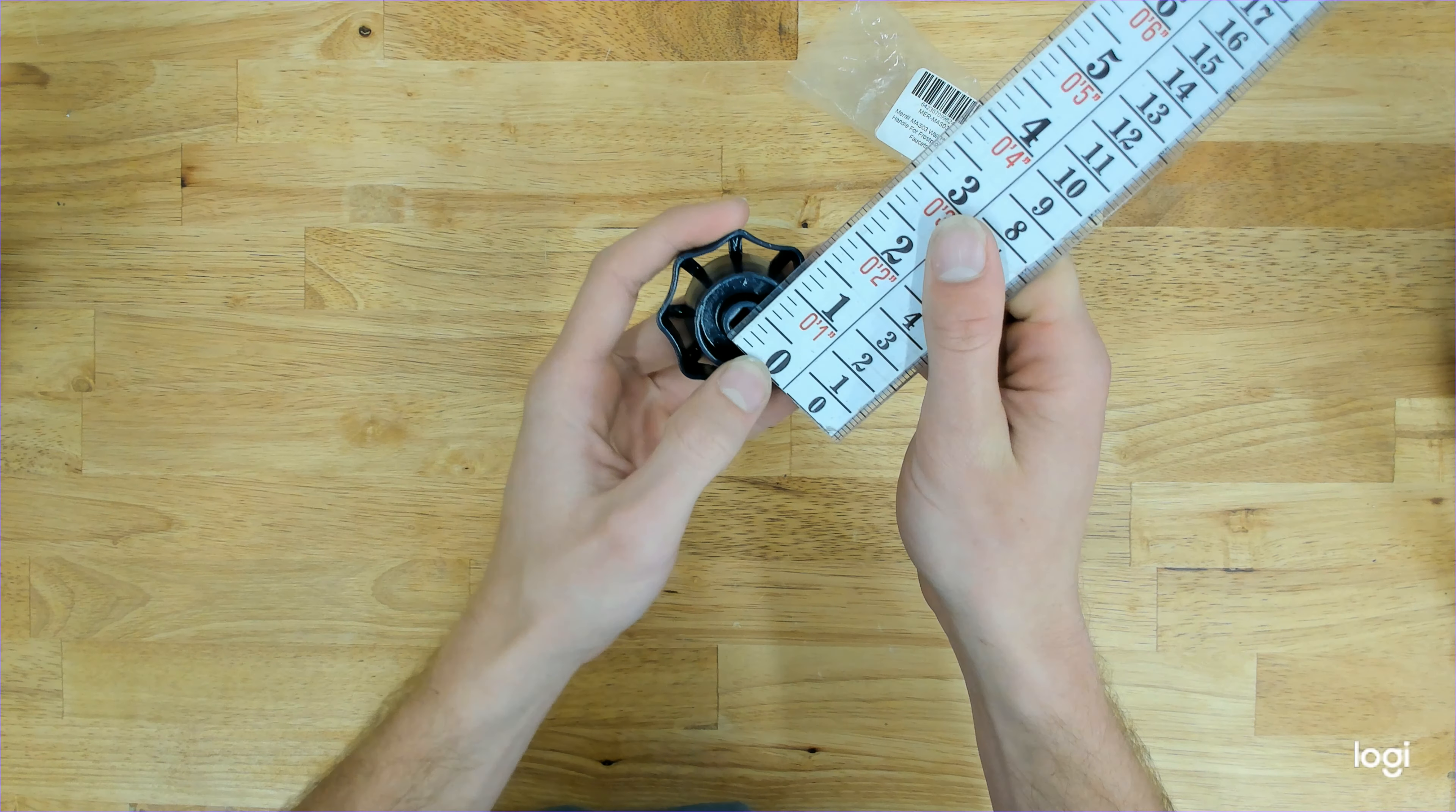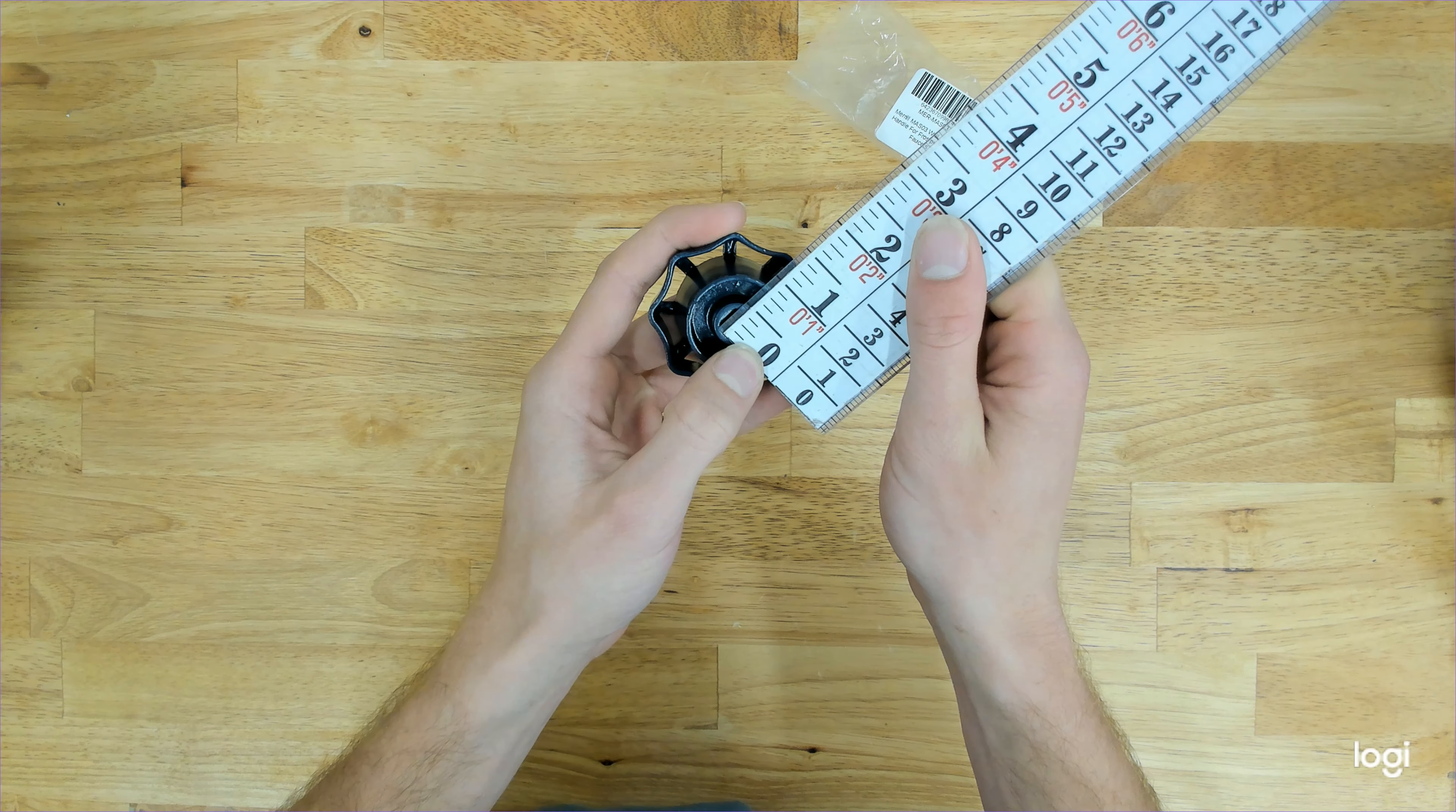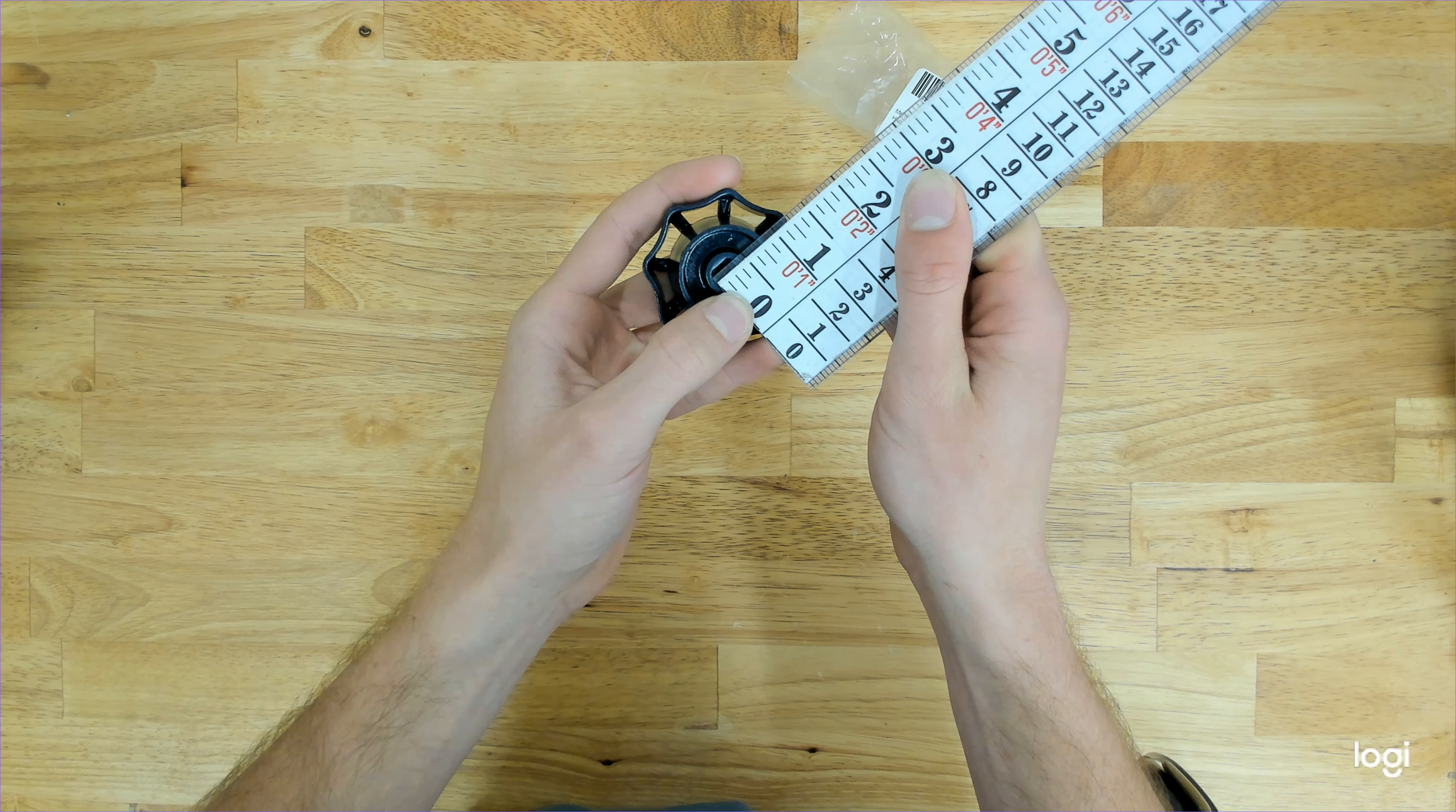And we can also get an inner diameter there at the square brooch. It measures just above a quarter of an inch.